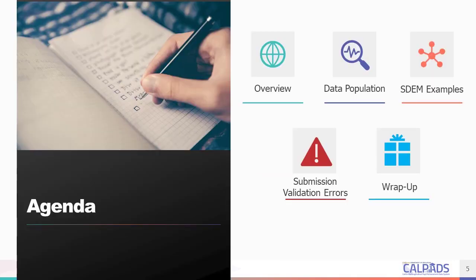Here is the agenda for this training. We will discuss the following: an overview of the submission, the details of the business rules and field specifications related to data population, how data should be reported by viewing examples, a few common validation errors, and lastly the submission errors before wrapping it up.